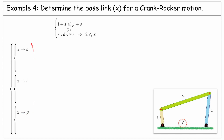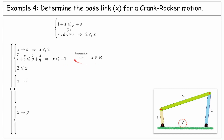Assuming X as the shortest, it must be smaller than or equal to 2 unit lengths. Substituting the lengths, the longest is 7, the shortest is X as we assumed, and the two others are 2 and 4. As you see, 7 is already greater than 6 and X should be less than minus 1 to maintain this requirement, which is impossible. On the other hand, we need to keep X longer than 2 unit lengths in order to respect the driver as the shortest link. Therefore, the intersection of this case is empty.